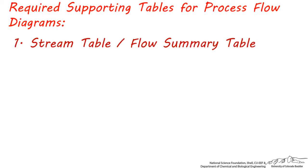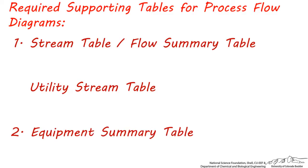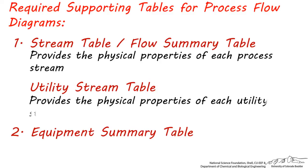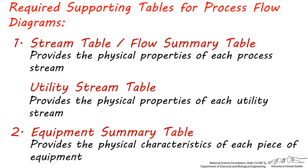There are two main tables that supplement every PFD. A stream table, also called a flow summary table, which is often accompanied by a utility stream table, and second, an equipment summary table. Stream or flow summary tables describe and list the physical properties of each process stream. Utility stream tables describe and list the physical properties of each utility stream. Equipment summary tables describe the physical properties of each piece of equipment in terms of its type, size, capacity, power, and other important aspects.